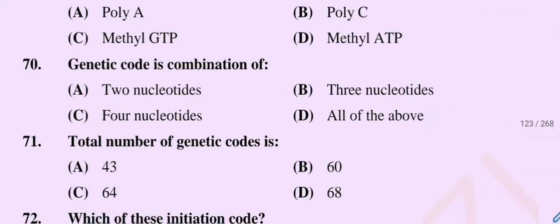Question number 70: Genetic code is a combination of — Option A: two nucleotides, Option B: three nucleotides, Option C: four nucleotides, Option D: all of the above. So genetic code is a combination of three nucleotides.